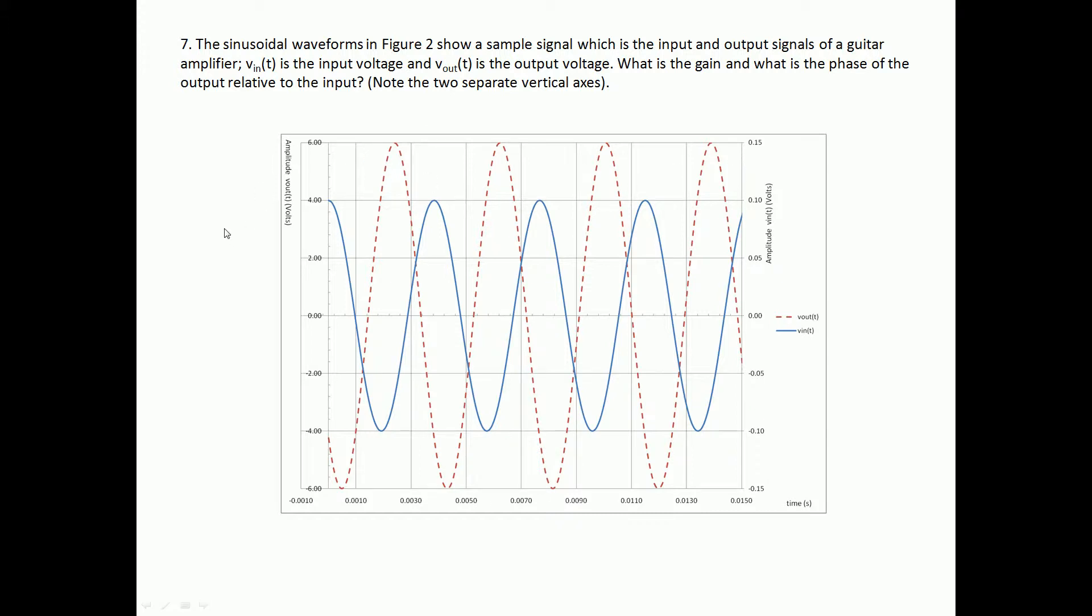So here we're told the sinusoidal waveforms in figure two show a sample signal which is the input and output signals of a guitar amplifier. V_in(t) is the input voltage and V_out(t) is the output voltage. It's like in programming, make sure you label your variables with something that represents what's actually going on. It makes things a lot easier.